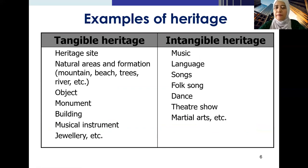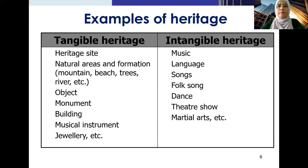For intangible heritage, we have music — you can hear it but cannot touch it. Language — it's spoken but you cannot touch it. Also folk songs, dance, theater shows, martial arts, and so on. There is one other example not listed here — what about people? Humans who possess heritage skills or heritage knowledge. Where do you categorize them? Is it tangible or intangible heritage? Because persons can be declared as national heritage.